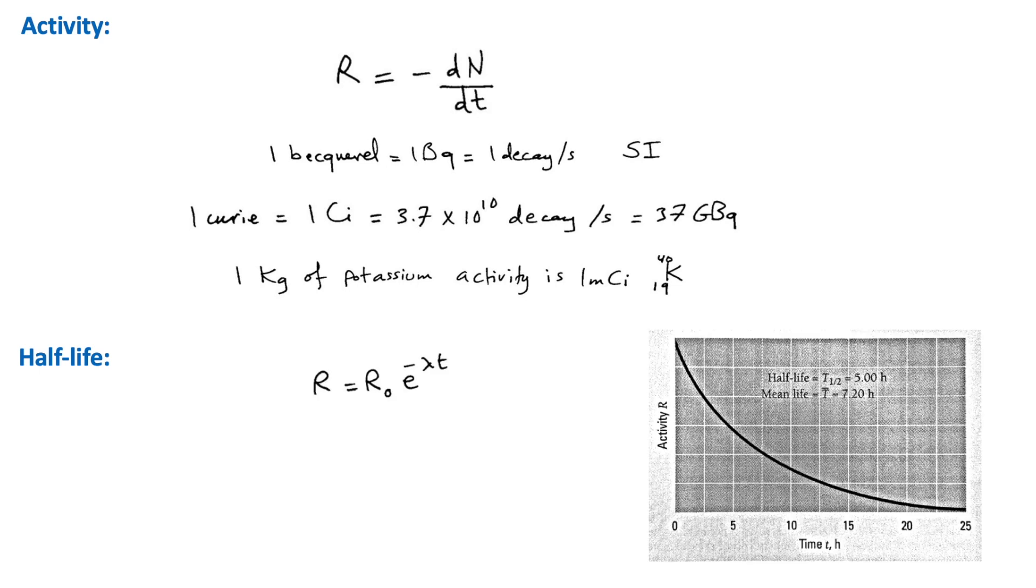Measurements of the activities of radioactive samples show that in every case, they fall off exponentially, as in this graph. This is the graph of R versus time for a typical radionuclide. As you can see, in every 5-hour period, regardless of when the period starts, the activity drops to half of what it was at the start of the period.